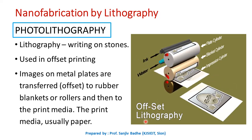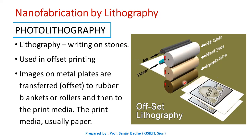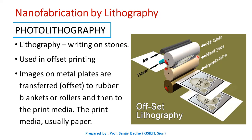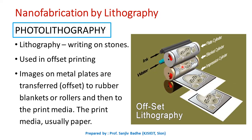It can be understood by using simple offset lithography, which is used in printing technology. In offset lithography, images on the metal plate are transferred to the rubber blankets and then transferred to the print media, which is usually paper. In this process, the image is first applied to a metal plate using a special greasy ink. After that, a solution of gum arabic and nitric acid is applied to the blanket cylinder. The area covered with gum arabic produces a water-receptive non-printing area, and the area covered with nitric acid produces a grease-receptive image area.